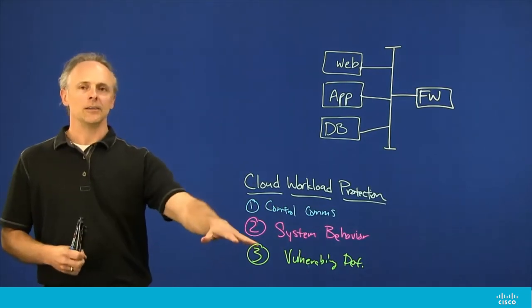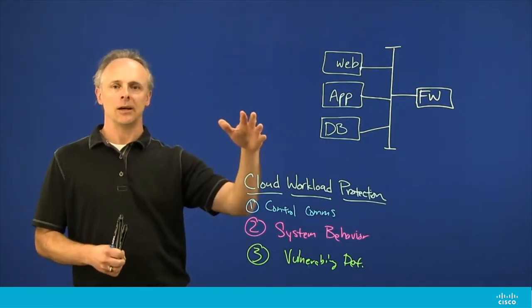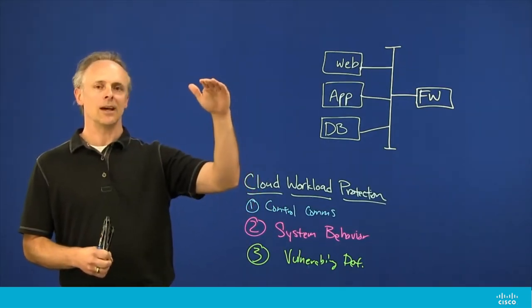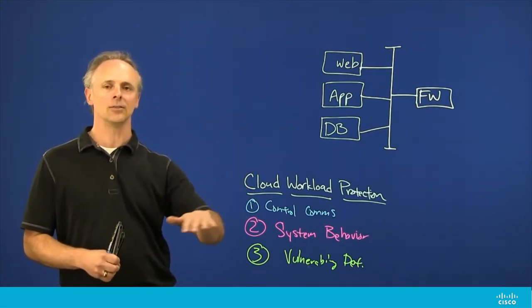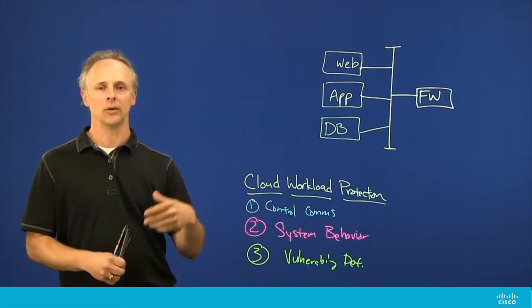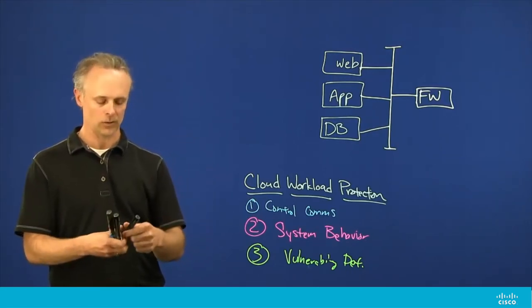I color-coded them like this because as we go through this example, I'm going to show some of the things that are actually taken advantage of during the attack and how each one of these controls could have helped with protecting this workload.